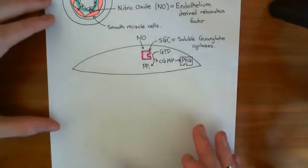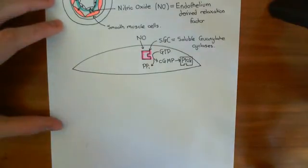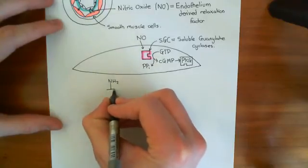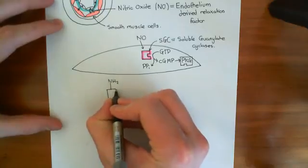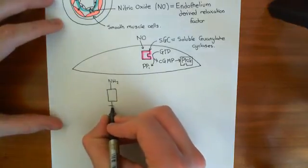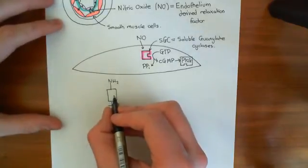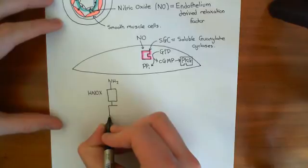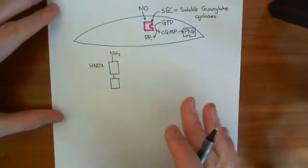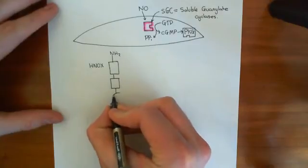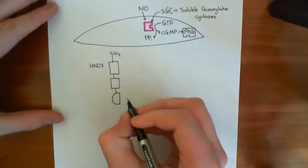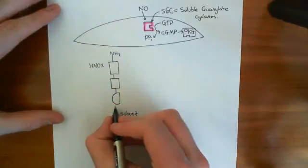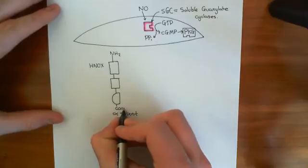Soluble guanylate cyclase enzymes consist of two subunits: an alpha and a beta subunit. Here's the amino terminus of the alpha subunit. At the top is a domain known as the HNOX domain, which stands for the heme nitric oxide and oxygen binding domain. Then there is a PAS regulatory domain in the middle, and then the catalytic domain at the bottom — which is half of the catalytic enzyme. So this is the alpha subunit, and at the end you have the carboxyl terminus of this polypeptide.